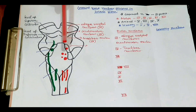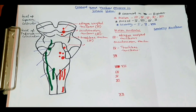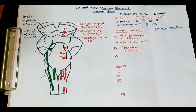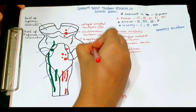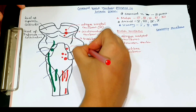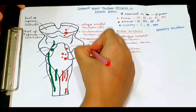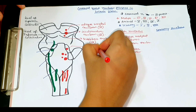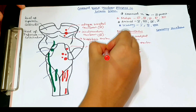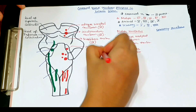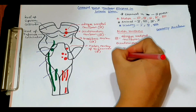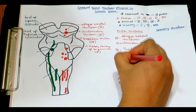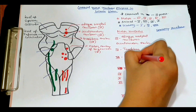In the mid pons, there is another nucleus which is the motor nucleus of cranial nerve five, the trigeminal nerve. I am writing it here on the diagram.